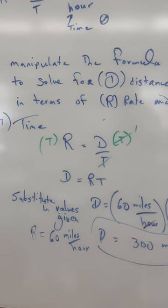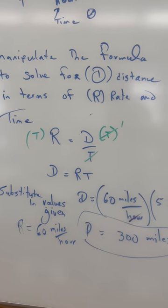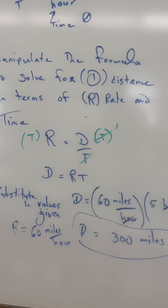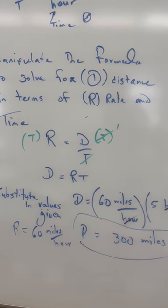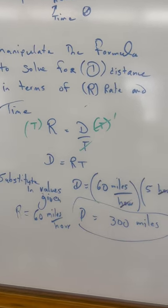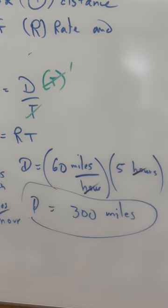Well we manipulate it mathematically. We just multiply by T on both sides. T over T is 1, therefore leaving D alone and that's what we want. D equals R times T and that's precisely what we need because they were in the problem.